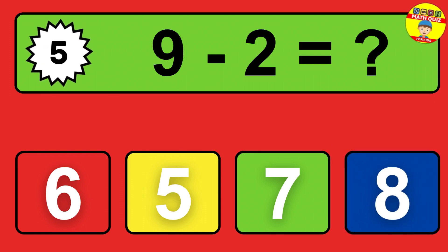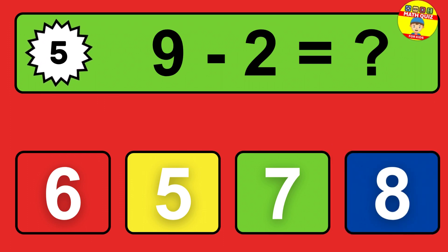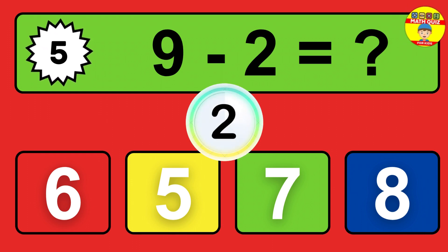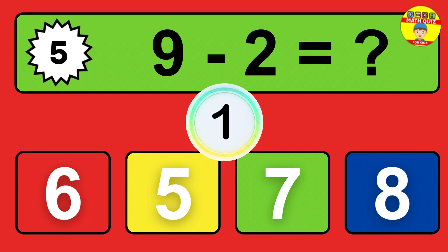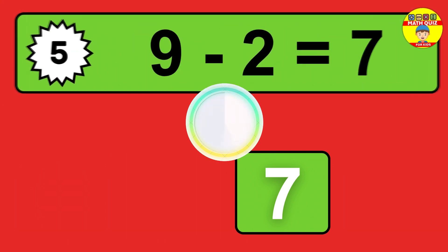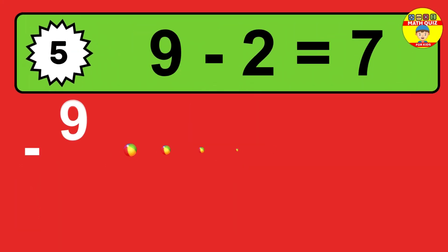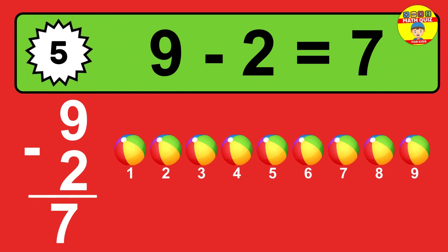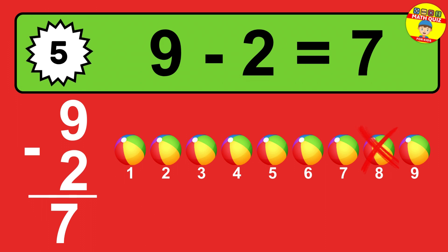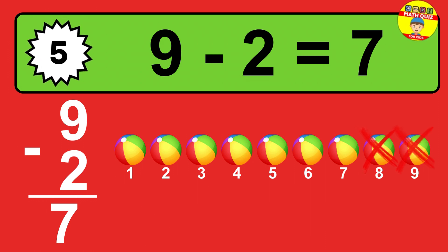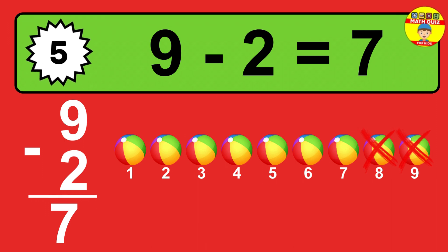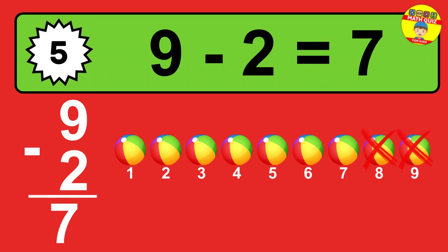Question 5. 9 minus 2 equals what? So the answer is 9 minus 2 is 7. Let's count it. 1, 2, 3, 4, 5, 6, 7.